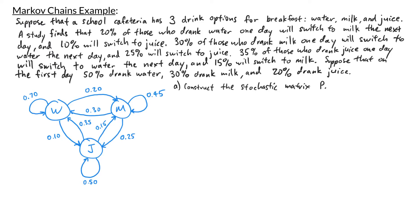I'm going to start by constructing a 3x3 matrix — it's 3x3 because I have three categories: water, milk, and juice. On top I'm going to write 'from,' and on the side I'm going to write 'to.' Then I list the three categories water, milk, and juice across the top, and repeat that down the side: water, milk, and juice.